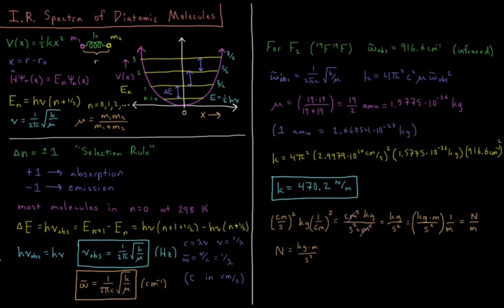So omega bar equals 1 over 2 pi C square root of K over mu. If I multiply both sides by 2 pi C and then square them both and then multiply by mu, what I'll solve is that K equals 4 pi squared C squared mu omega bar squared.